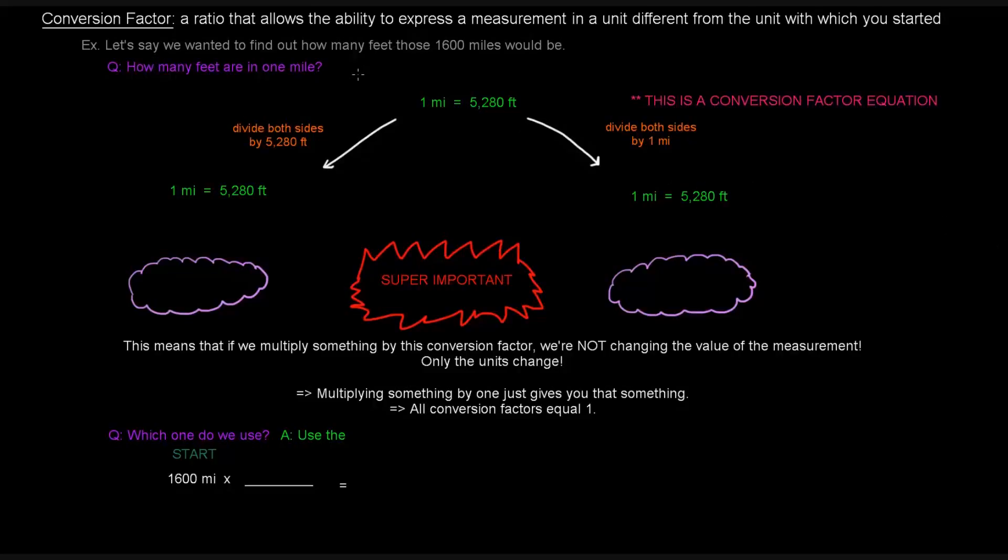Let's say those 1600 miles that we just found, we wanted to know how many feet that is. The first question you'd ask is how many feet are there in one mile? The answer is one mile equals 5,280 feet. This definition is called the conversion factor equation.